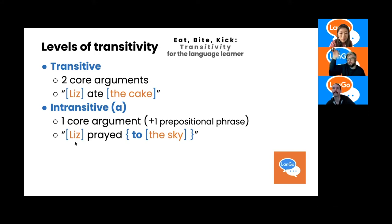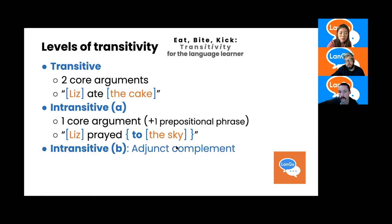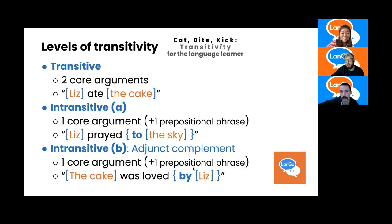An adjunct in syntax means it's not core — not essential. The meaning can mostly be recovered without it. In our next example, we've managed to use our third verb from eat, pray, love. We have one core argument and one prepositional phrase again: 'the cake was loved by Liz.' It's fine to say 'the cake was loved' — there's a little oddness, but imagine cake loving were a crime. You'd automatically say 'the cake was loved.'